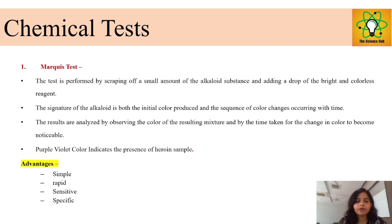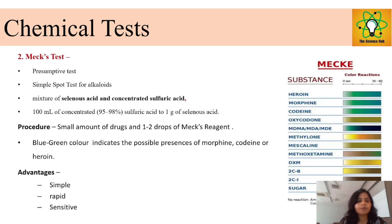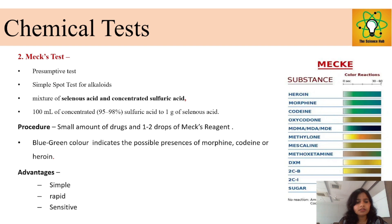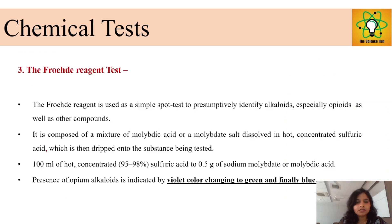Advantages of chemical tests are that they are simple, rapid, sensitive, and specific. Another test is the Scott test, a spot test in which the reagents are selenic acid and concentrated H₂SO₄, which changes the color to blue-green. The advantages remain the same: simple, rapid, and sensitive.